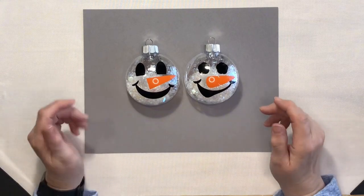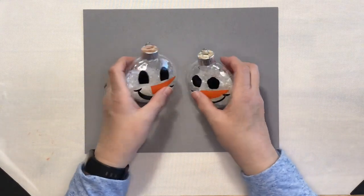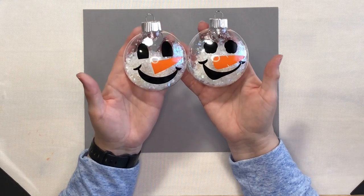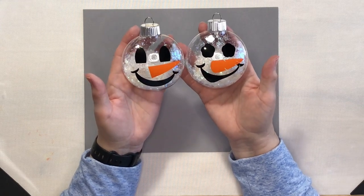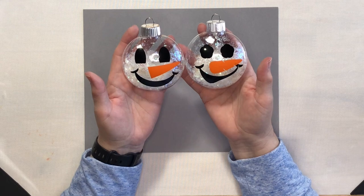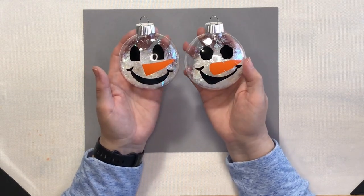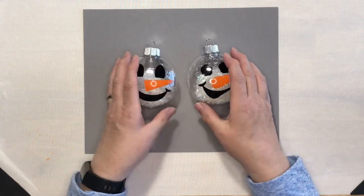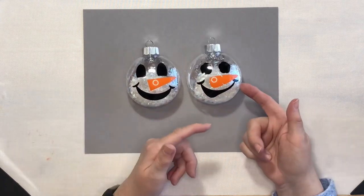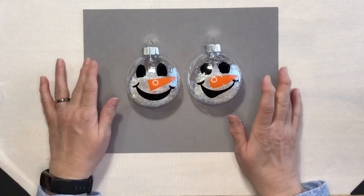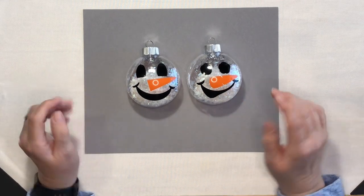Well, here are our two finished snowman ornaments. Aren't they just adorable? I think they turned out fantastic. I did learn a good lesson with this first one, so I will keep that in mind when I make some more of these. But even with the carrot overlapping the corner of the mouth, I think this ornament is just adorable.